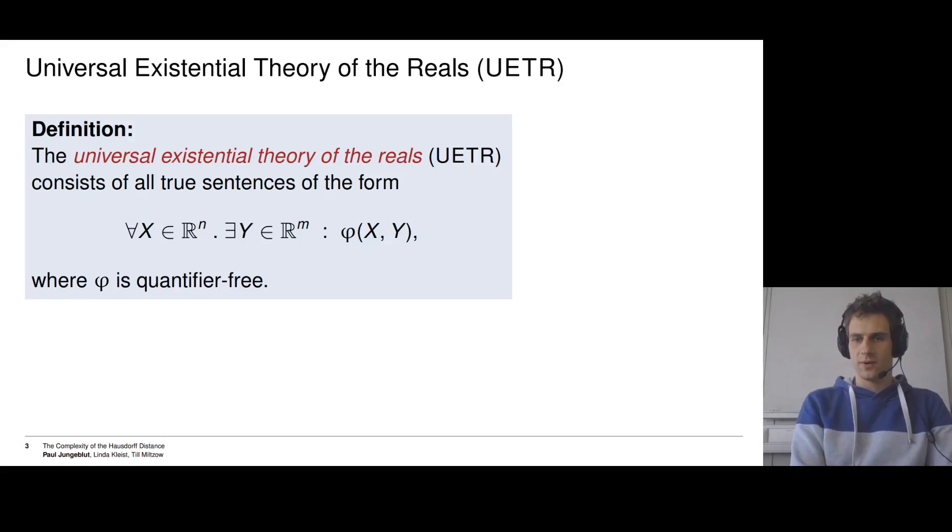Okay, now we know what the complexity class, which complexity class we are looking at, but we don't know anything about the complexity class yet. And this complexity class is defined via a canonical complete problem. This problem is called the universal existential theory of the reals, short UETR.